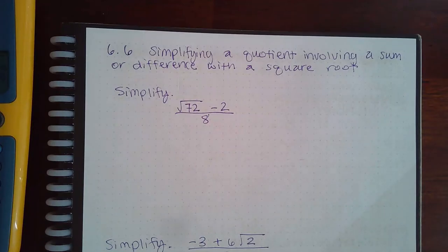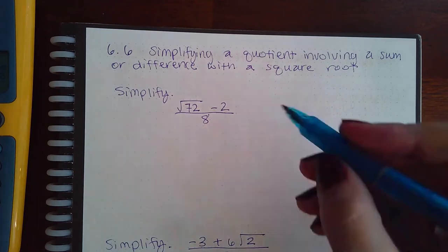So here we have simplifying a quotient involving a sum or difference with a square root. In this case, we have to simplify that square root and then we also have to separate the fraction.